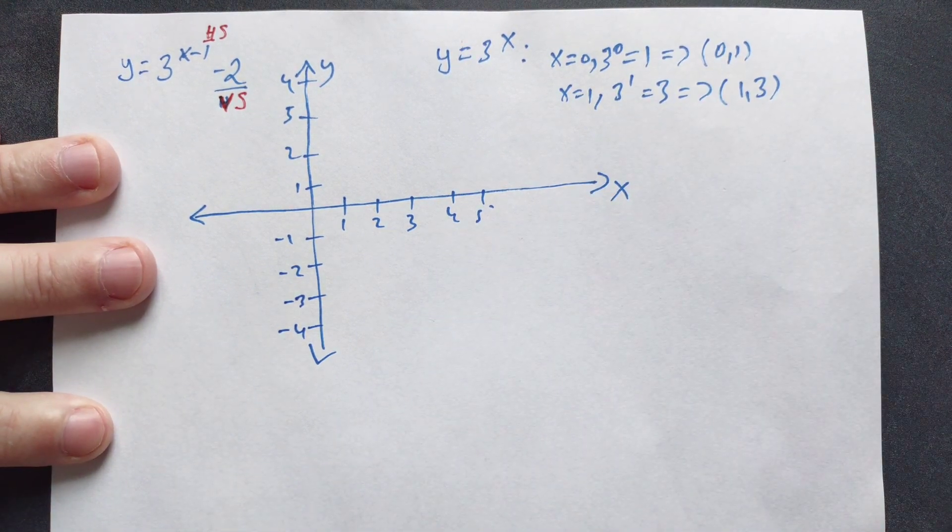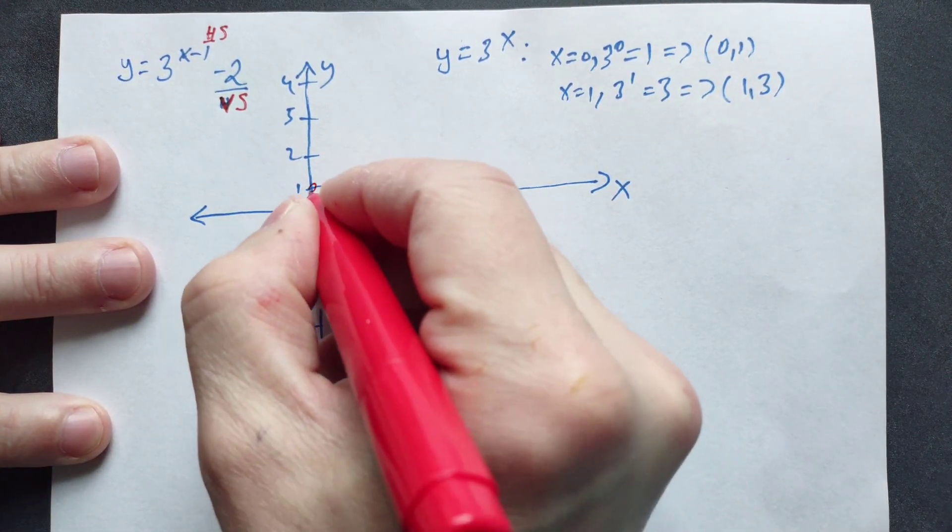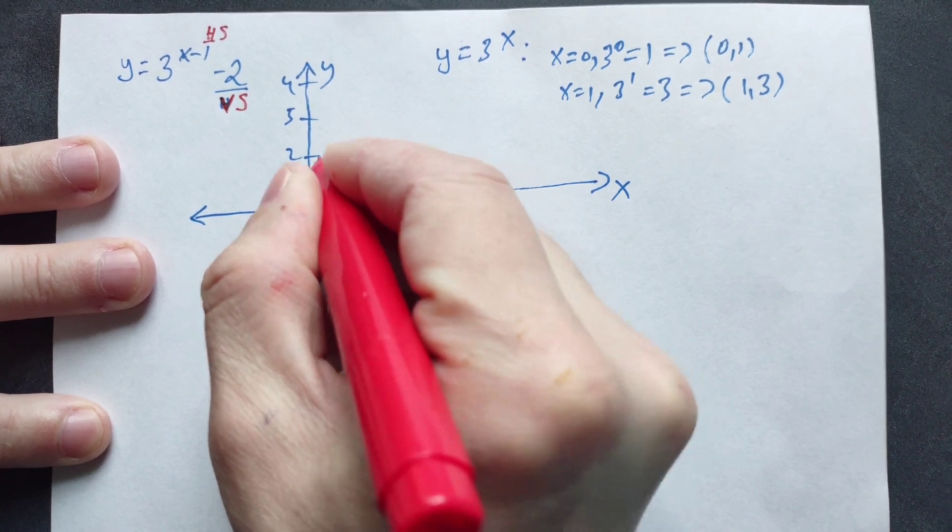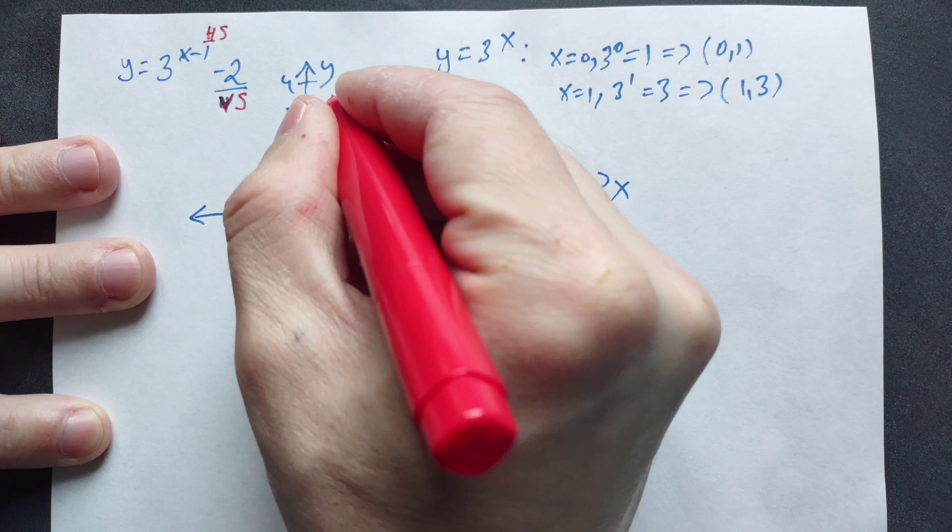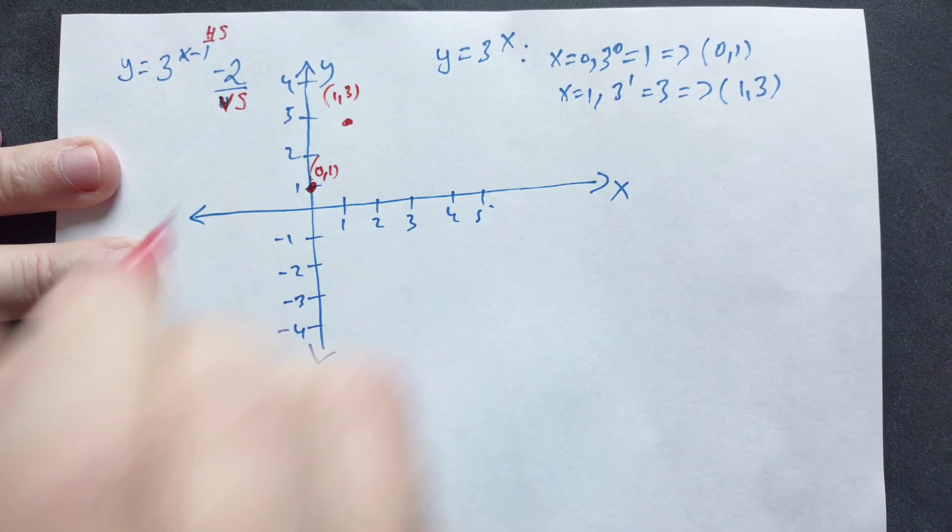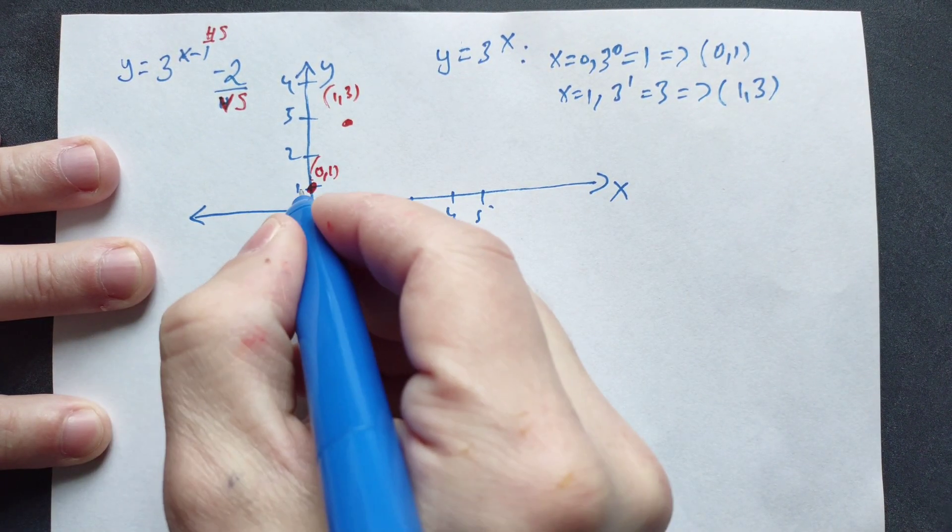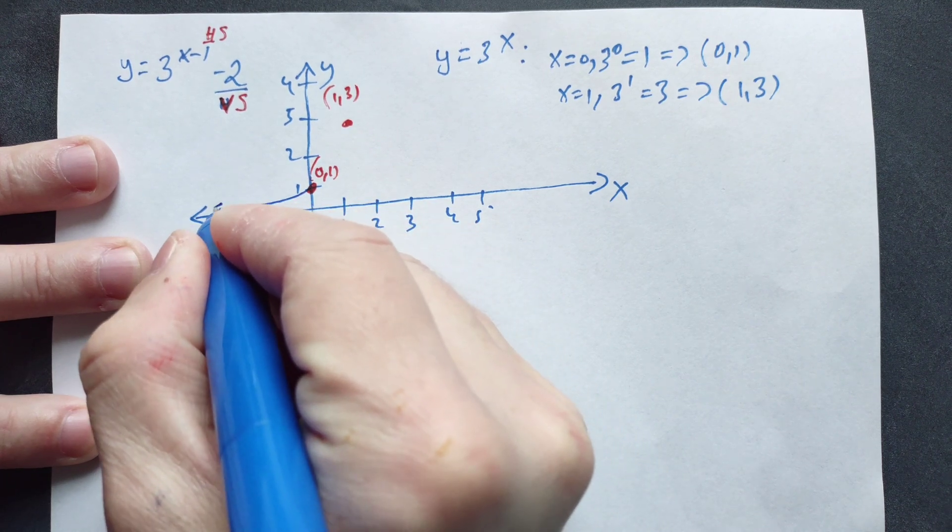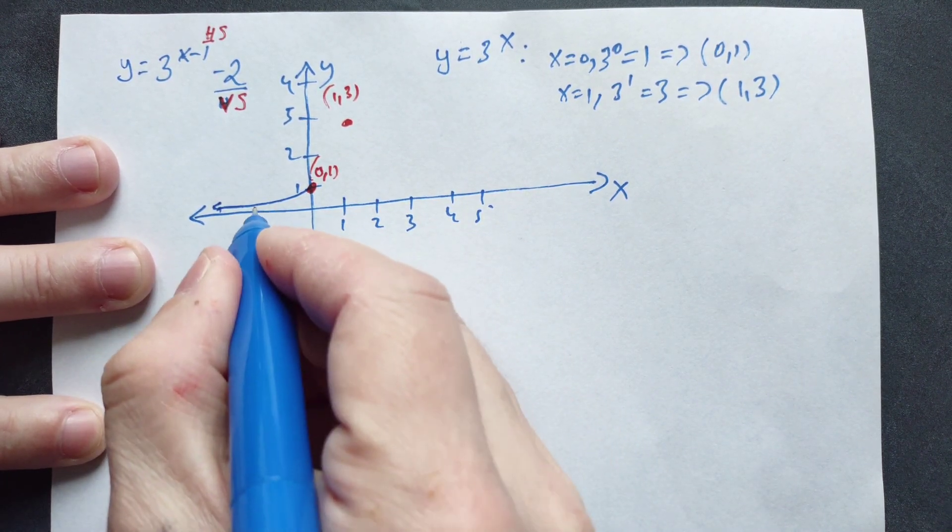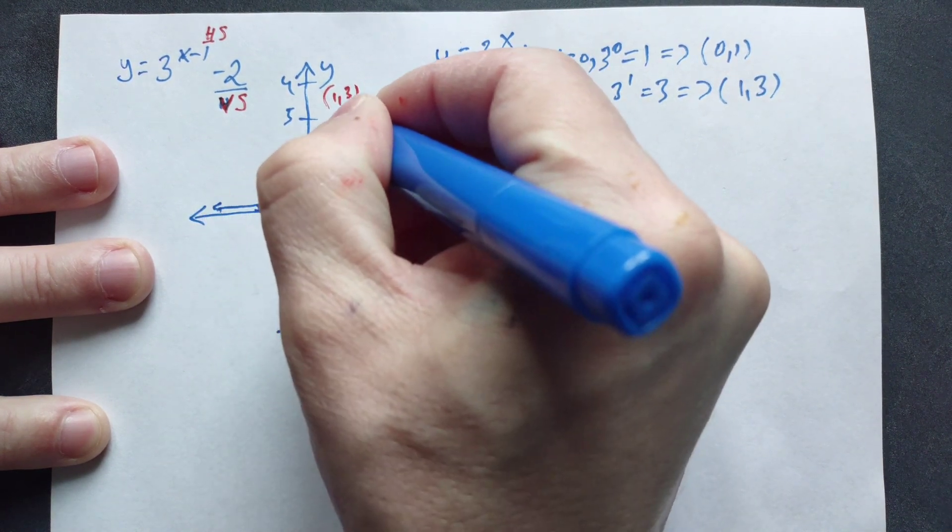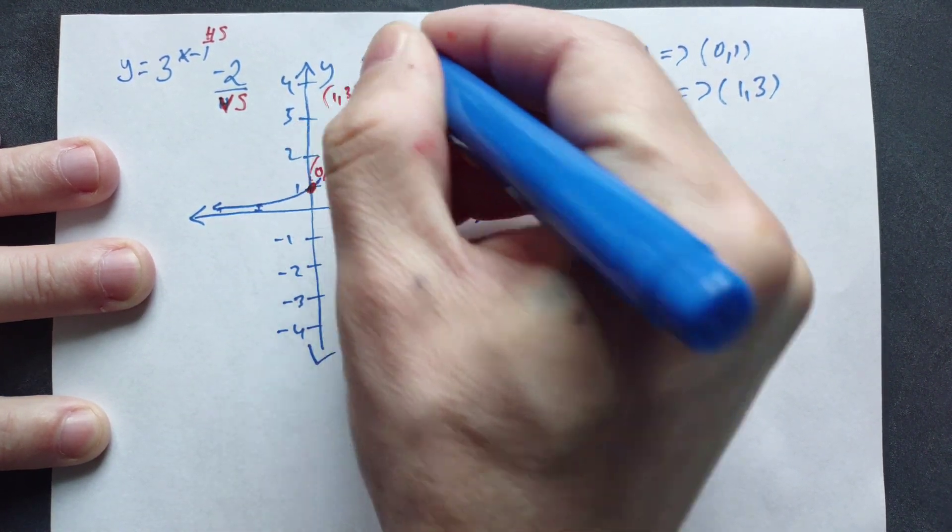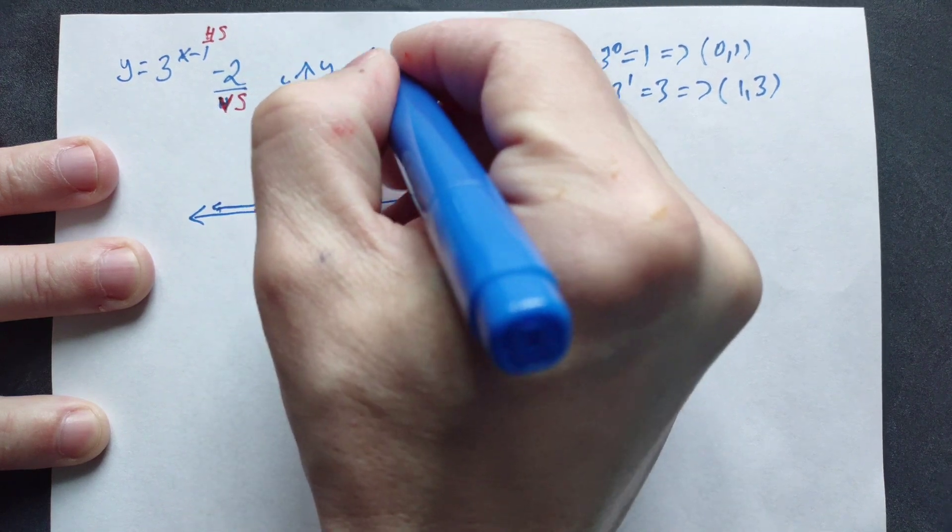So mark the point 0, 1 in here first. So 0, 1 is right here. Then mark the point 1, 3. So say that point is right up here. This is 1, 3. And then you connect these. So you end up with something that looks like this. Remember that 3 to the x is asymptotic to the x-axis. There should always be a gap here. And it passes through these points, and then goes off in this direction. So this is the graph of just 3 to the x.